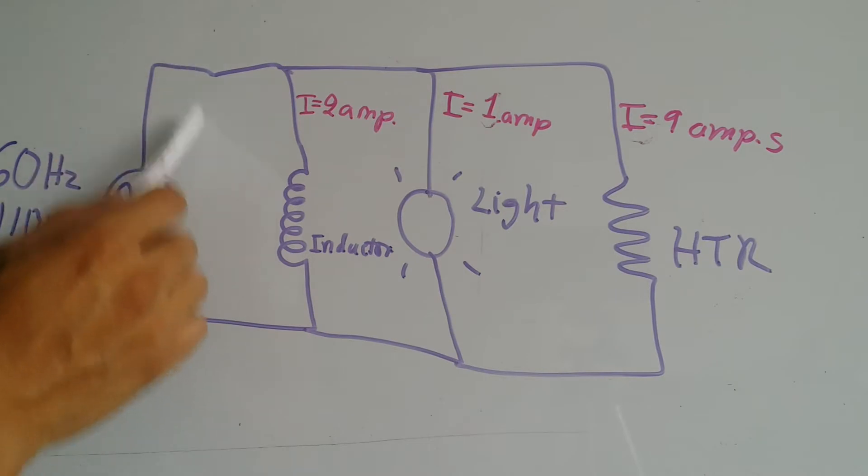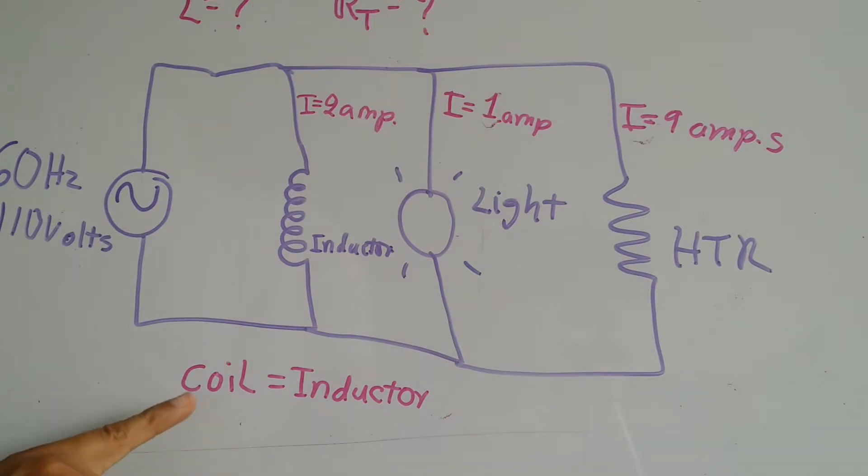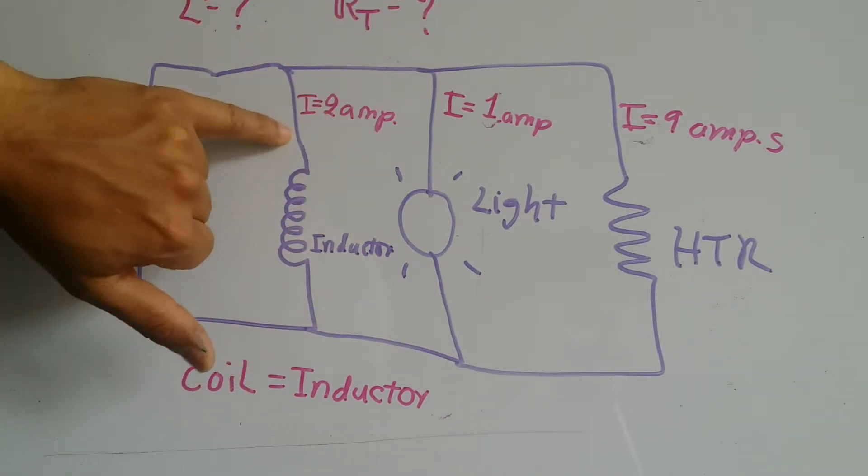I got a current of 2 amps, 1 amp, and 9 amps. We want to find out the total resistance of this system and also we are going to get what is the inductor value for this particular coil. Just to be clear, coil is just a piece of wire that is coiled, and that's what an inductor is.